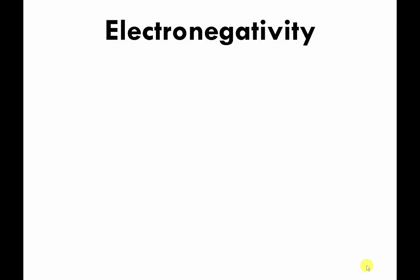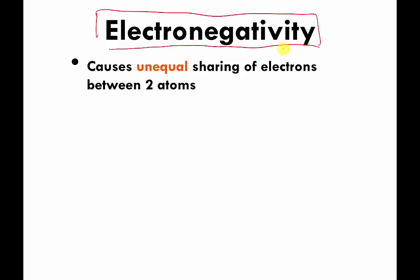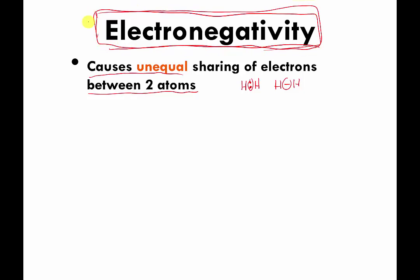In this video I want to talk about a feature of an atom called electronegativity. Electronegativity is a feature of an atom, and depending on how much electronegativity an atom has, it can cause unequal sharing of electrons between two atoms. We spent a lot of time in the last couple of videos talking about how different atoms can share electrons, like two hydrogen atoms sharing a pair of electrons in a single covalent bond.